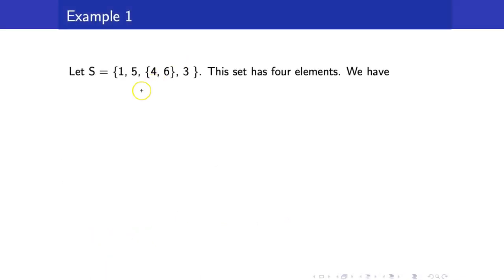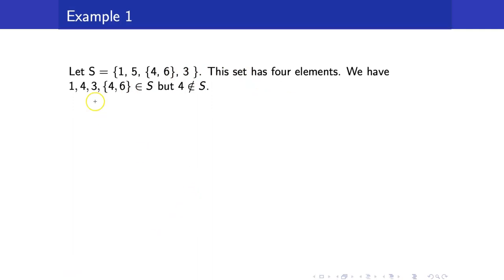Here is an example of a set. We have the set S containing the elements 1, 5, the set {4, 6}, and 3. This set has 4 elements: 1, 5, 3, and the set {4, 6}. Note that 4 is not an element of S — we do not see a standalone 4 here; we just have the set containing the elements 4 and 6.